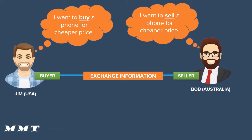We met Jim from USA and Bob in Australia in the web basics section. Jim is a buyer thinking to buy a phone at a cheaper price, and Bob in Australia wants to sell a phone. So Jim being the buyer and Bob being the seller, they want to exchange information — we discussed all those things in the web basics. Let's understand how information is exchanged between Jim and Bob, and how HTML helps us do that.